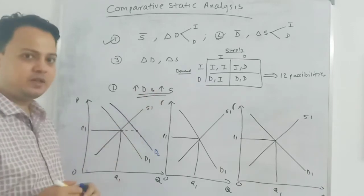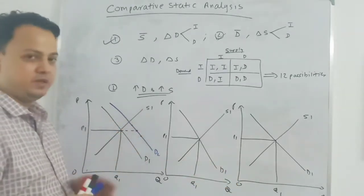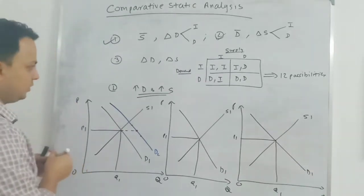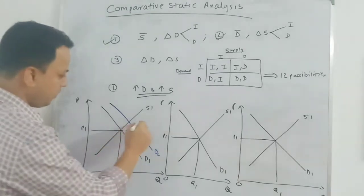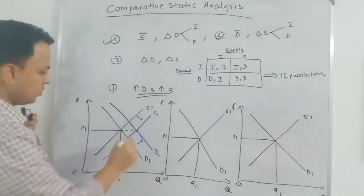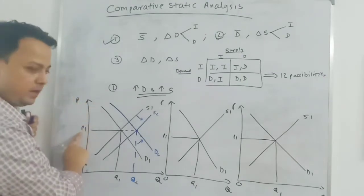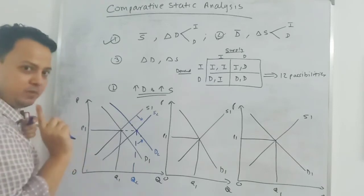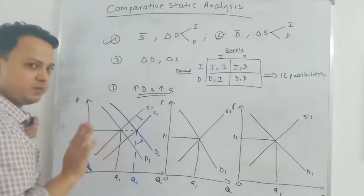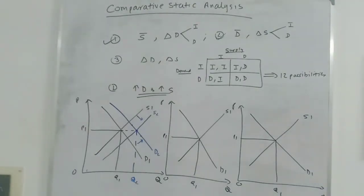In the case of an increase in demand and an increase in supply, the conclusion is: equilibrium quantity will be higher. Price can be higher, lower, or can remain the same. In graph one, I draw the case where price remains the same — demand shifts to D2, supply shifts to S2, so at the new equilibrium price is P1 = P2 and equilibrium quantity is higher at Q2.